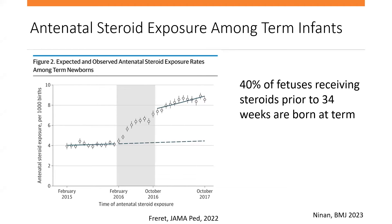A 2023 article demonstrated that almost 40% of fetuses receiving steroids prior to 34 weeks are born at term — again highlighting the fact that we're not great at predicting who will actually deliver preterm, and that a lot of these babies end up making it to term after receiving steroids.